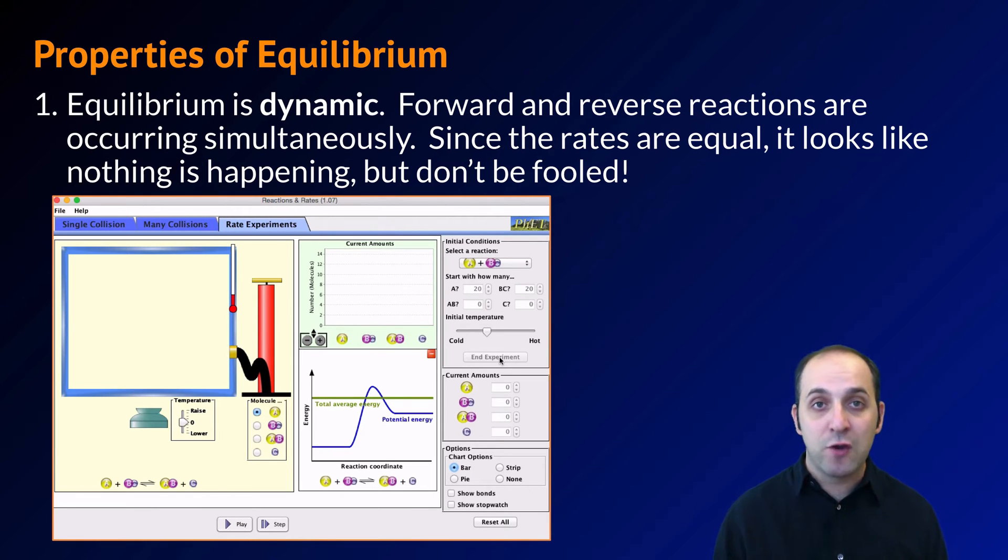But don't be fooled. If you could look at the atomic level, you'd see that there were actually millions and millions and millions of reactions occurring in both directions simultaneously. Since the rate of those two reactions is the same, the amount of the substance that we have will seem like it's not changing all that much. But of course it is changing, it's just changing at a microscopic level.